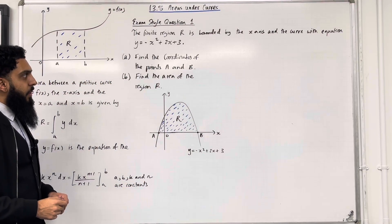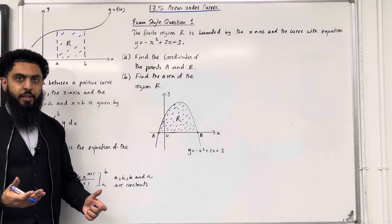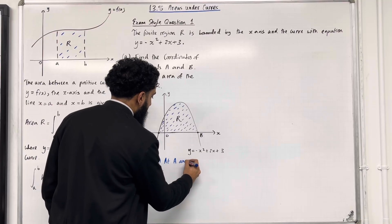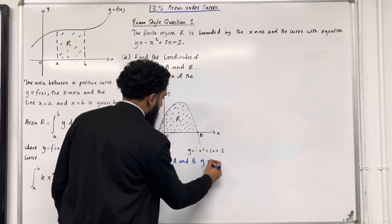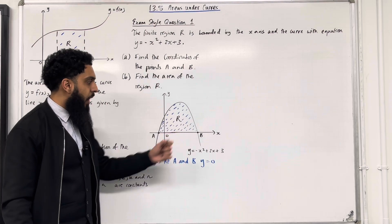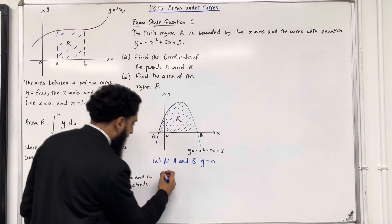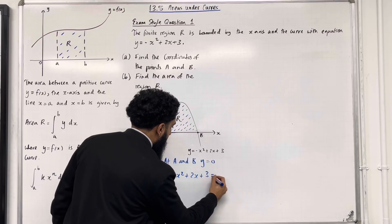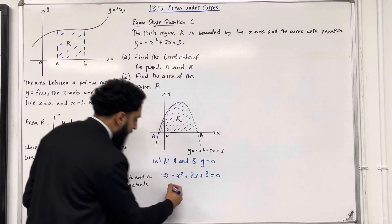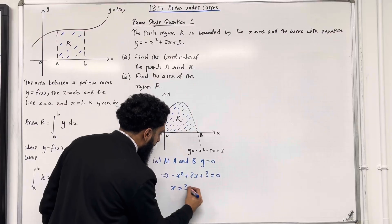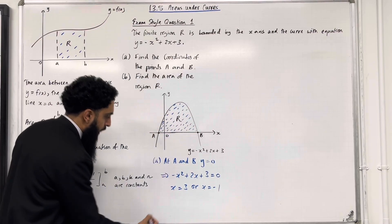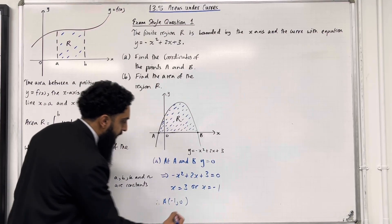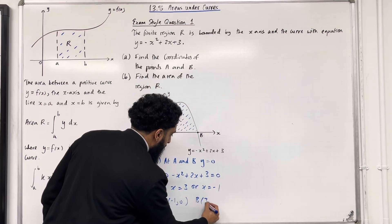Part A: find the coordinates of the points A and B. At A and B, y is equal to 0, because A and B are x-intercepts. This implies that -x² + 2x + 3 = 0. If I solve this quadratic equation, I get x = 3 or x = -1. Therefore, the coordinates for A would be (-1, 0) and the coordinates for B would be (3, 0).